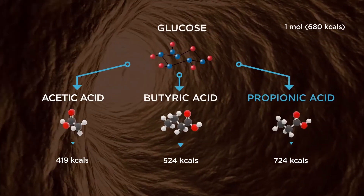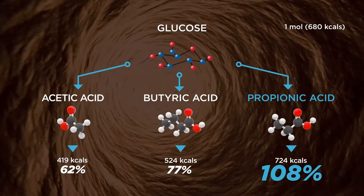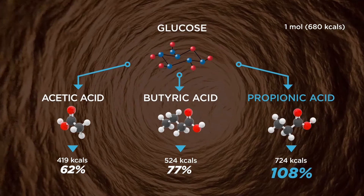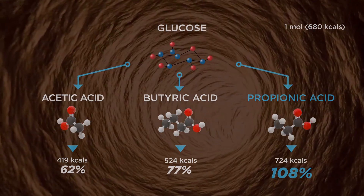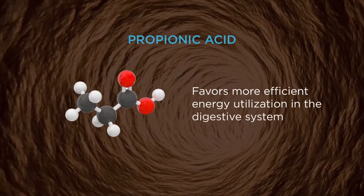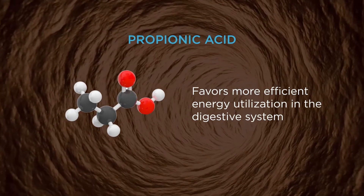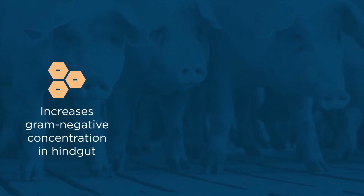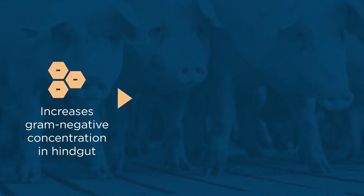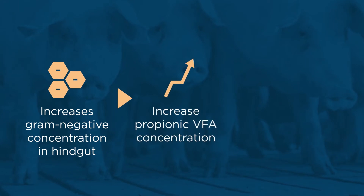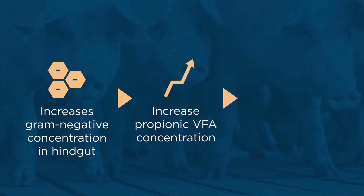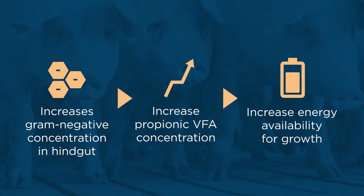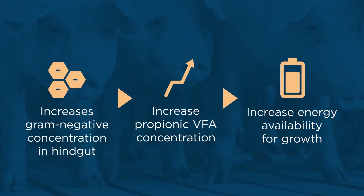Perhaps the most important benefit of propionic acid is the higher level of energy efficiency it offers. Fundamentally, propionic acid favors more efficient energy utilization in the digestive system. In other words, improved feed utilization equates to increased gram-negative concentration in the hindgut, which causes increased propionic acid concentration, which causes increased energy availability and growth. And more energy availability for growth benefits productivity.